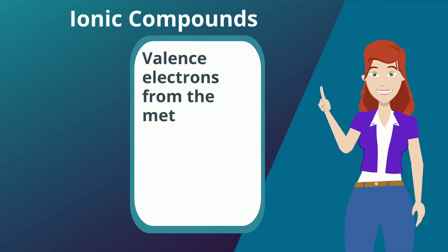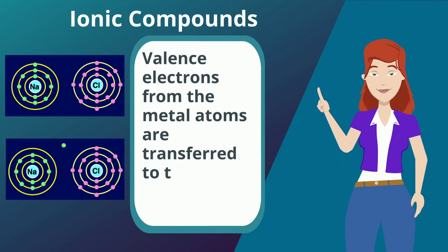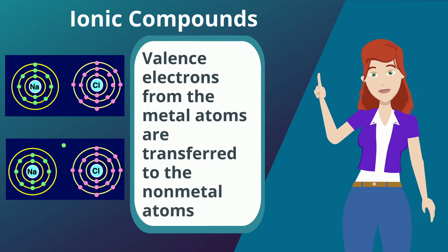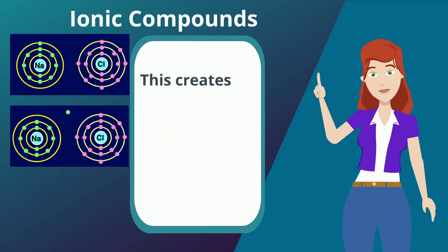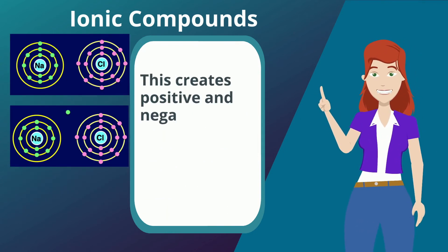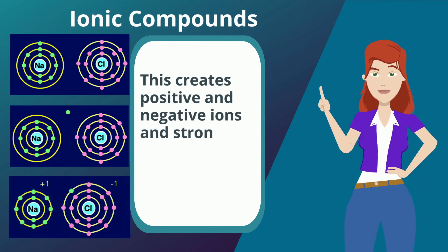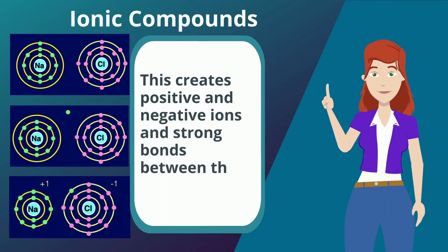The valence electrons from the metal atoms are transferred to the non-metal atoms in ionic compounds. This creates positive and negative ions and strong bonds between the atoms.